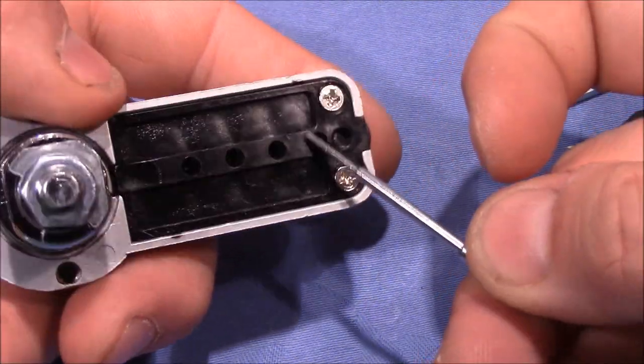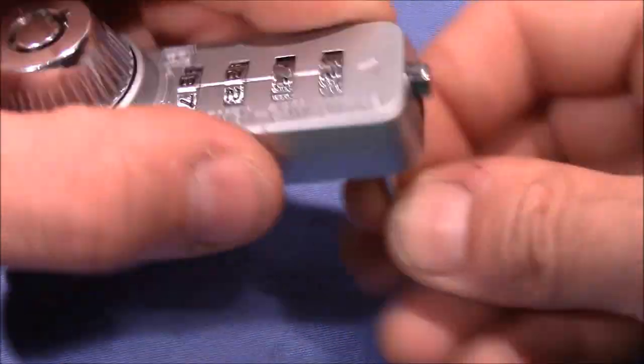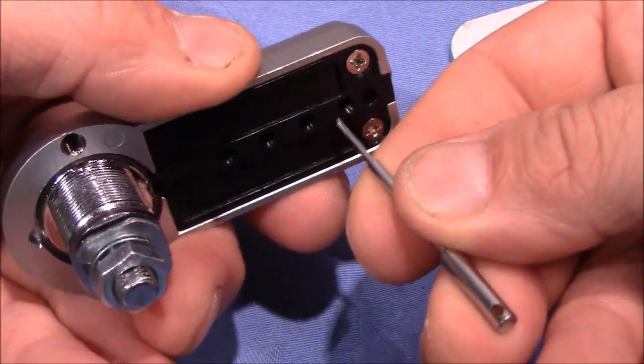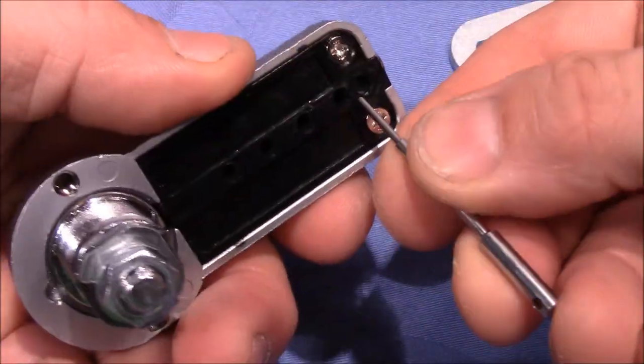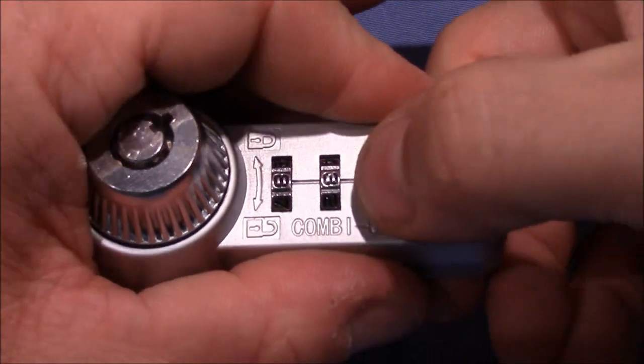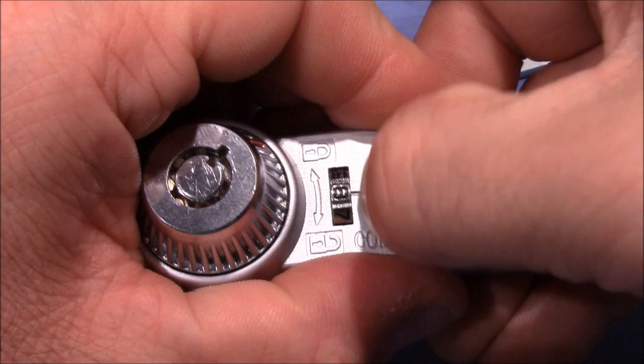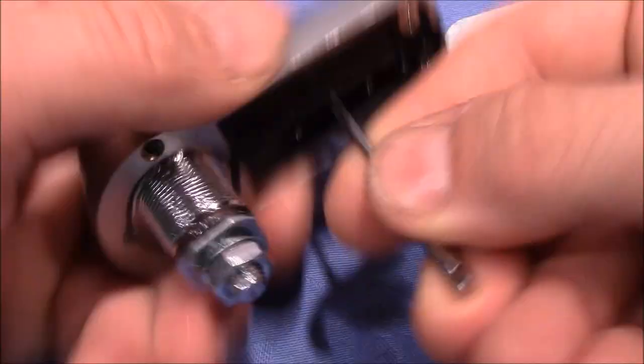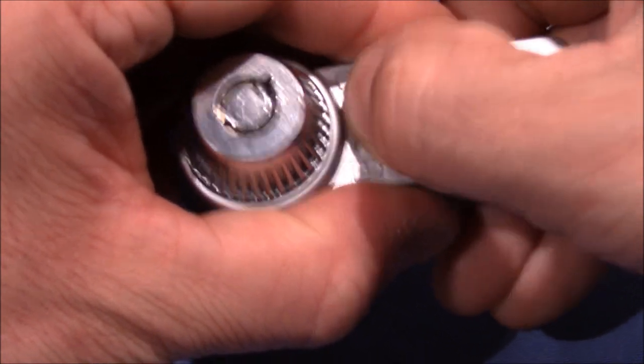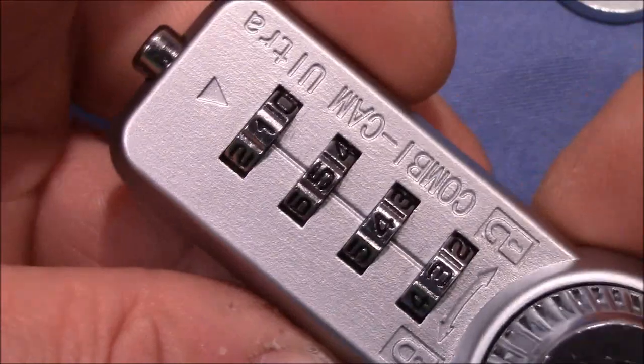Now if I want to find the correct code I have to use this antenna here that I have to stick in these holes. When I do this and turn the wheel it makes a click and the antenna goes a little bit deeper. There's a little hole inside when the right code is entered and the probe will fall into this hole. Let's do this for the second and for the third.